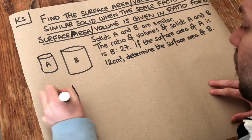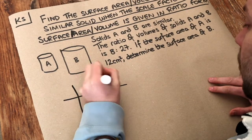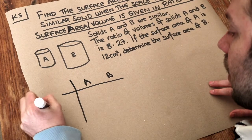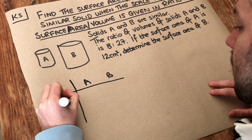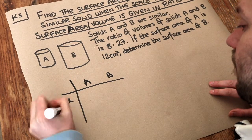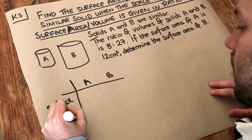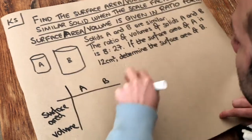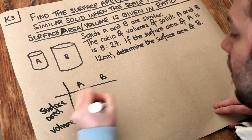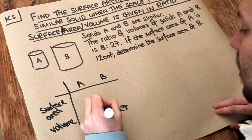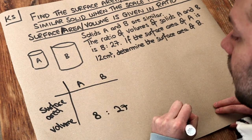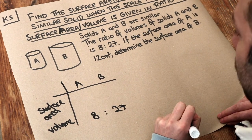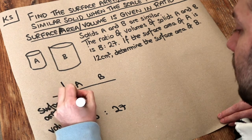So I like to have a little table to summarize the information we have. We've got the surface areas and we've got the volume. Now we don't actually know the volumes of A and B, but we're told the ratio is 8 to 27, so we can just treat those as the volumes. And we're also given the surface area of A, which is 12 centimeters squared.